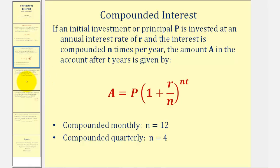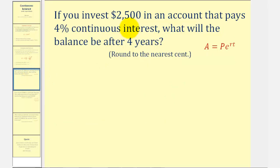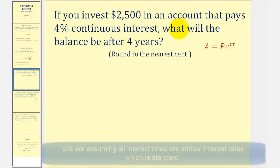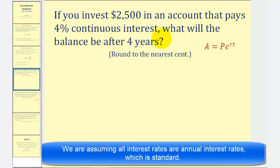Let's take a look at our first example. If you invest $2,500 in an account that pays 4% continuous interest, what will the balance be after four years?